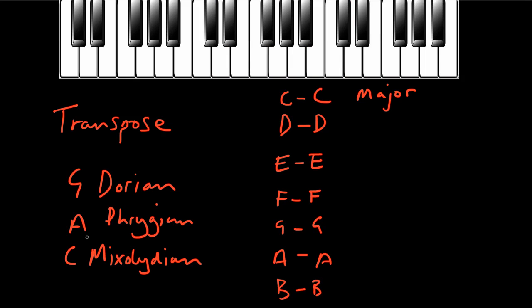I use exactly the same notes that I would use in a C major scale, but I just started it on D and ended it on D. The same thing is true if I want to build an E Phrygian mode — the E Phrygian, because it's a white note scale, is using all of the notes of C major, but we're just starting on an E instead of a C. Another way we could describe the identities of all of these modes is really in terms of thinking of them as just being a variant of a certain major scale but starting on a different scale degree.